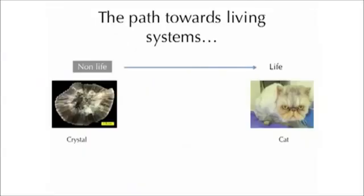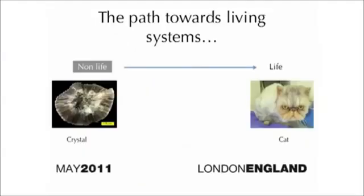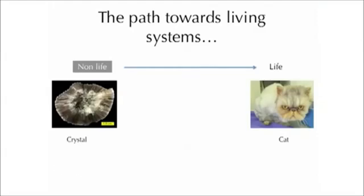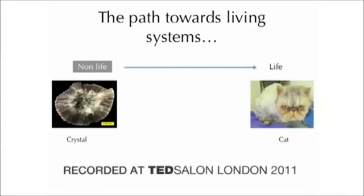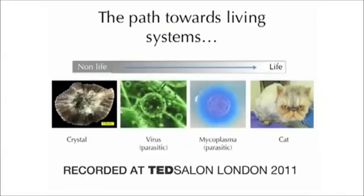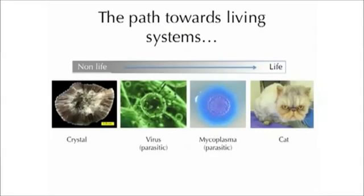Historically, there's been a huge divide between what people consider to be non-living systems on one side and living systems on the other side. So we go from, say, this beautiful and complex crystal as non-life and this rather beautiful and complex cat on the other side. Over the last 150 years or so, science has kind of blurred this distinction between non-living and living systems, and now we consider that there may be a kind of continuum that exists between the two.